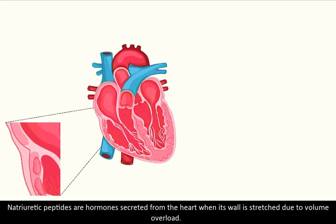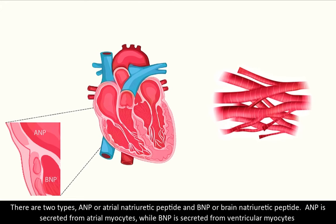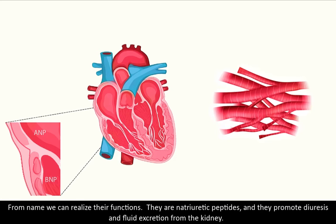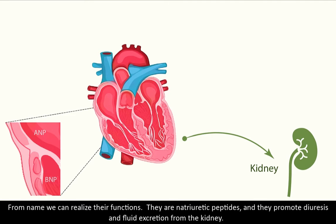Natriuretic peptides are hormones secreted from the heart when its wall is stretched due to volume overload. There are two types: ANP or atrial natriuretic peptide and BNP or brain natriuretic peptide. ANP is secreted from atrial myocytes while BNP is secreted from ventricular myocytes. From the name, we can realize their function — they are natriuretic peptides and they promote diuresis and fluid excretion from the kidney.